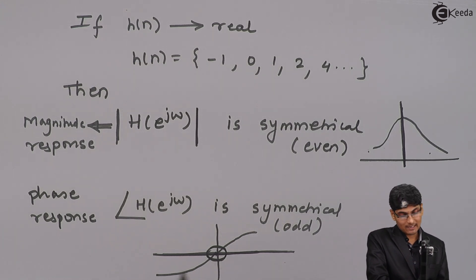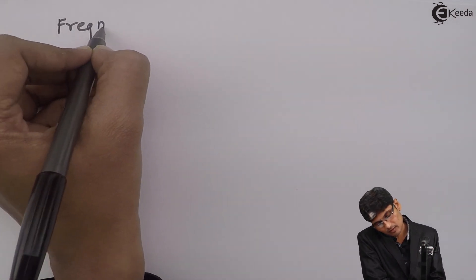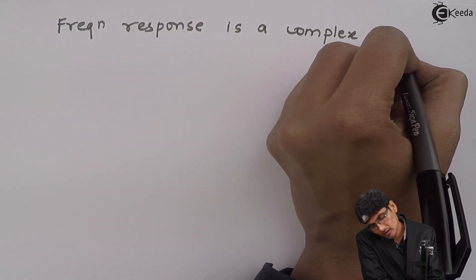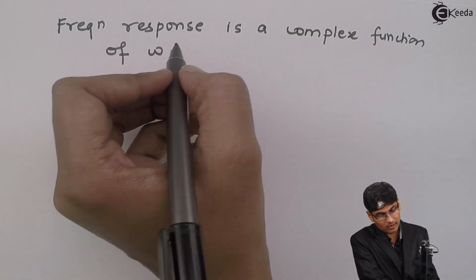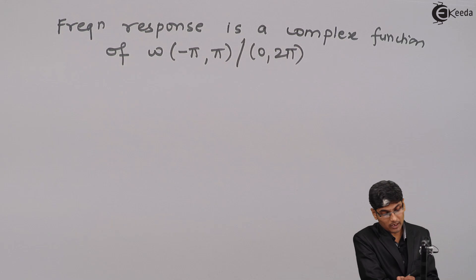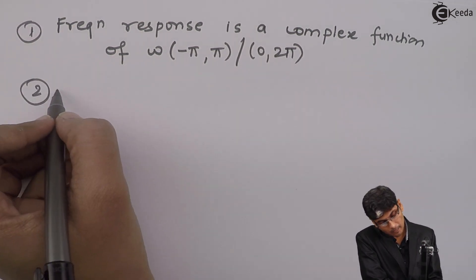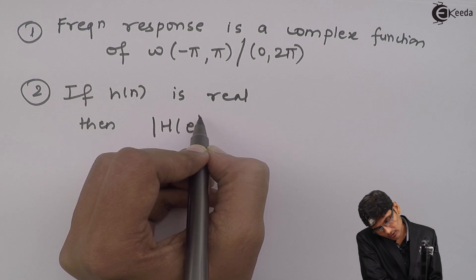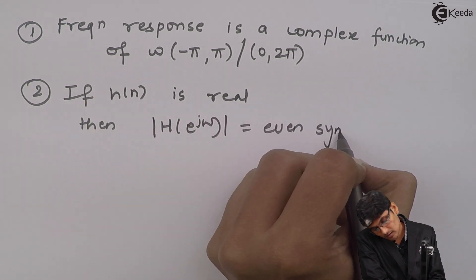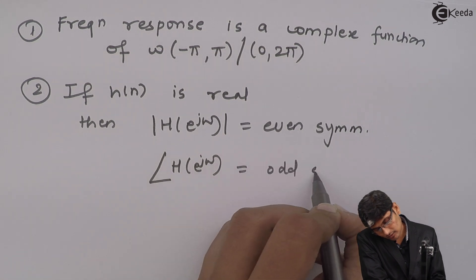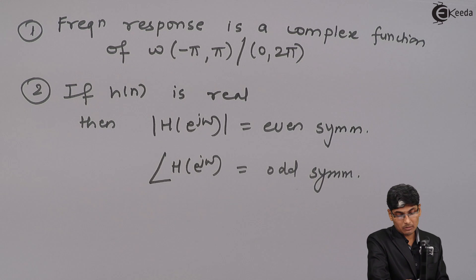To summarize: a frequency response is a complex function of omega, where omega goes from −π to π or from 0 to 2π. If h(n) is real, then |H(e^jω)| will be even symmetric and the angle of H(e^jω) is odd symmetric. These two points we have to keep in mind while dealing with a frequency response. Thank you.